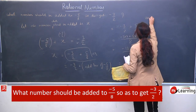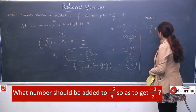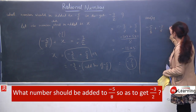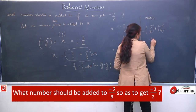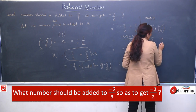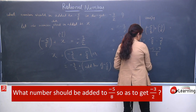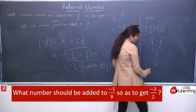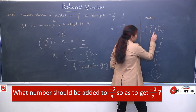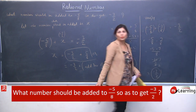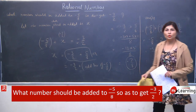Although the question does not ask for verification, we should verify our answer. Substituting: minus 5/8 plus minus 7/8. LCM is 8: minus 5 minus 7 = minus 12 upon 8. This cancels by 4: 4 threes are 12 and 4 twos are 8, giving minus 3 by 2. The answer is verified — we get minus 3 by 2 as required. Always verify to ensure there are no mistakes.